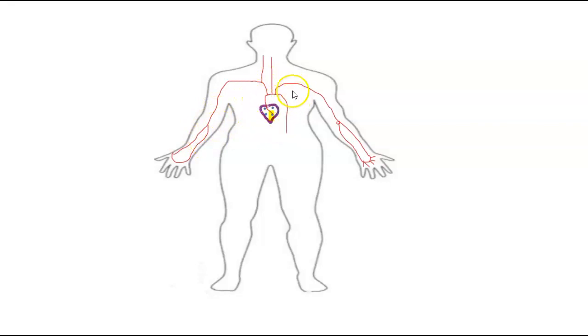Now this aortic arch area is in the chest area. So we sometimes call this the thoracic aorta and it gets down into the belly button area. We call this the abdominal aorta, and the abdominal aorta continues and splits into two sides.